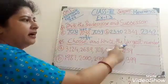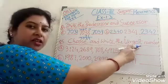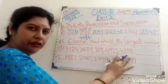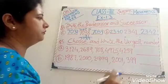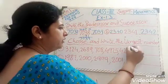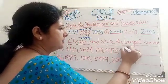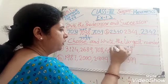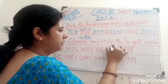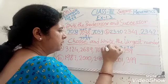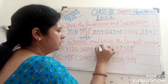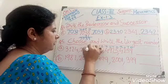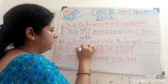Choose and write the largest number. These are the following numbers. Again we write down 1, 10, 100, 1000 — like this way — for each of the four numbers.